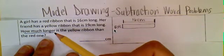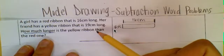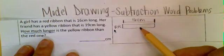So then her friend has a yellow ribbon that's 19 centimeters long. We want to know how much longer the red ribbon is, or we want to know how much longer the yellow ribbon is versus the red ribbon. So we're going to represent yellow ribbon as a YR, and then we are going to draw a box.